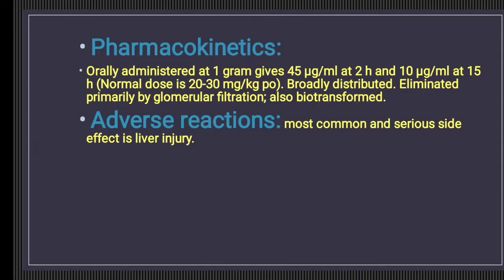Pyrazinamide is orally administered, achieving 45 micrograms per ml at 2 hours and 10 micrograms per ml at 15 hours. The normal dose is 20 to 30 mg per kg orally. It is broadly distributed and eliminated by glomerular filtration, so dose adjustment is required in patients with renal impairment.